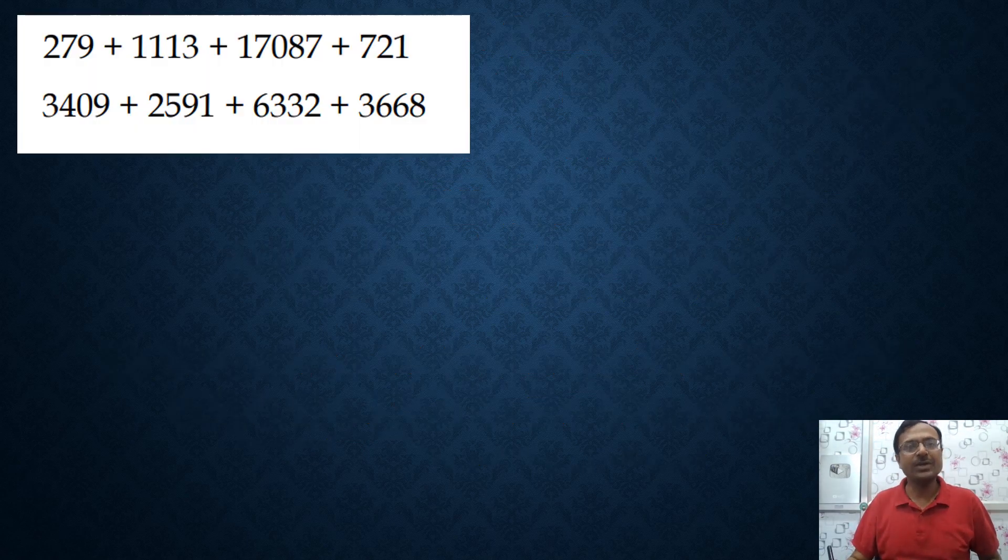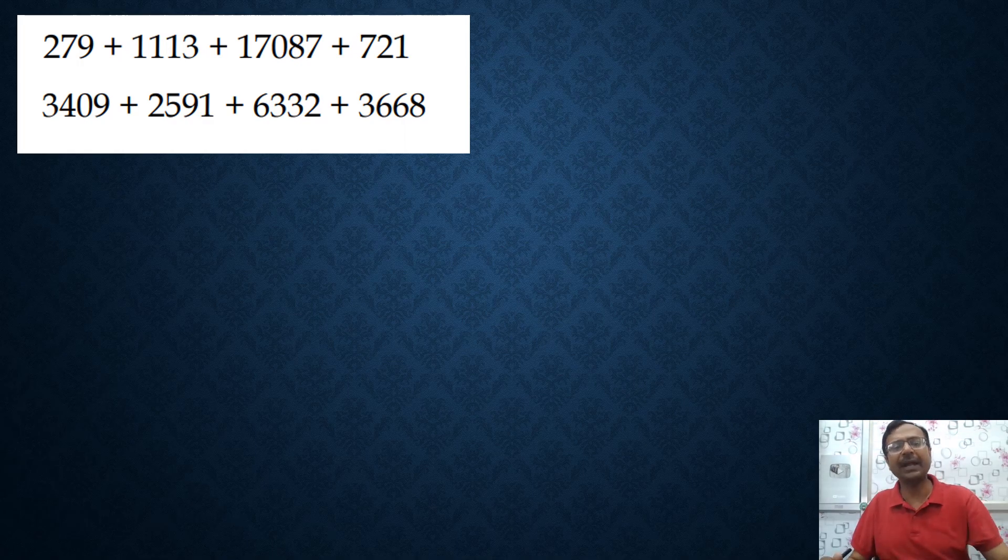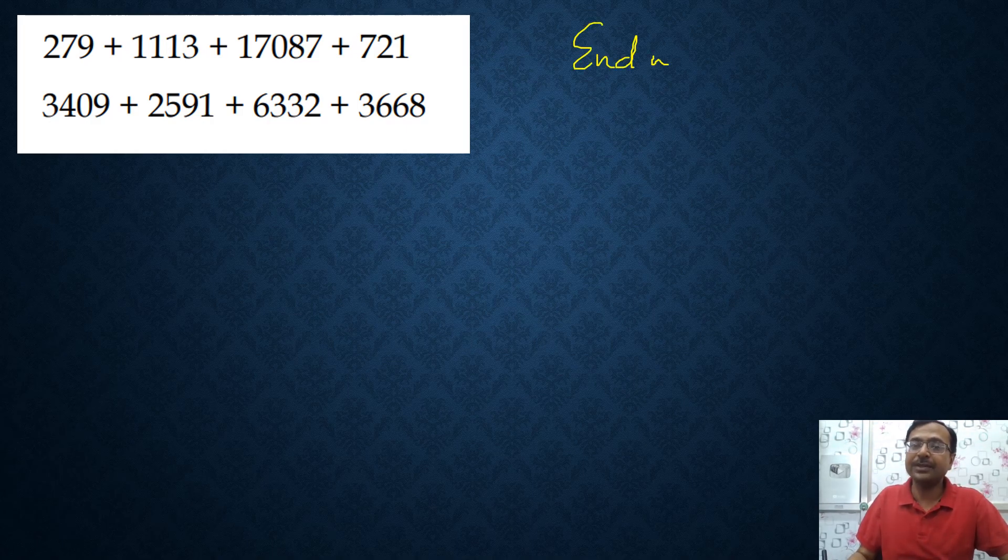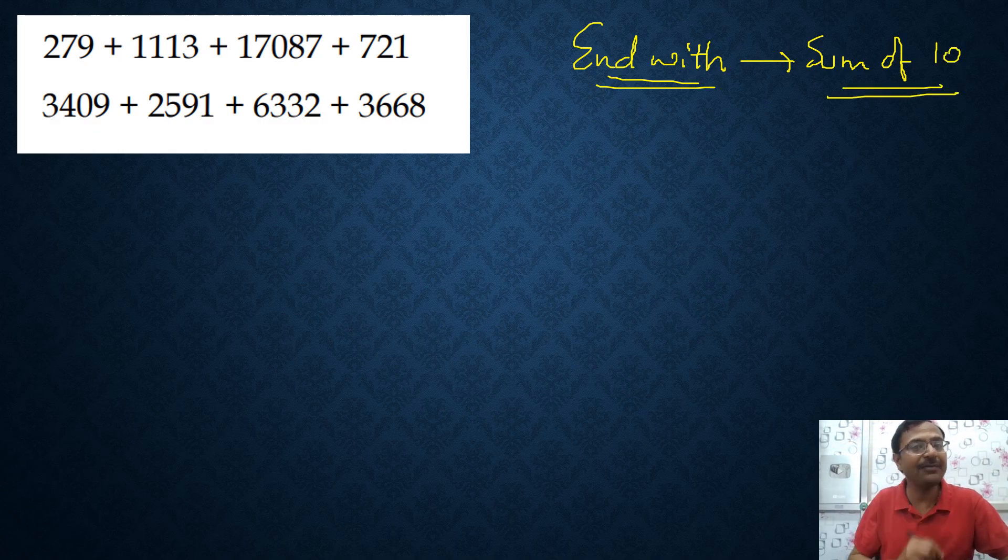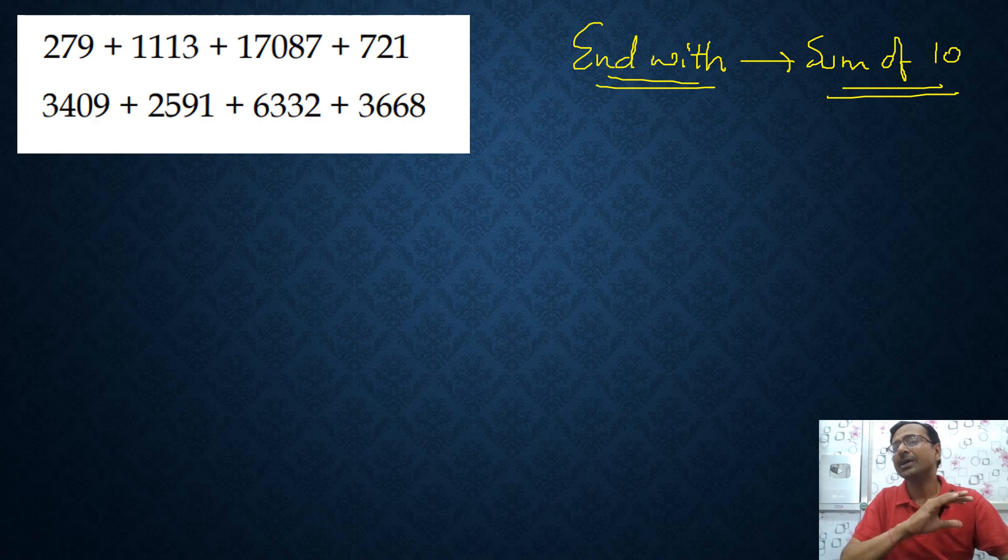Let's see the questions in hand. Look at the addition problems given here. If you see carefully there are three digit numbers, four digit numbers and five digit numbers in the addition problem. What happens when you add them in random order, you spend a lot of time, but properties are going to help you. You need to see which numbers end with a sum of 10 in the unit digits. If you are able to identify that, then this addition problem is going to be a mental maths problem.